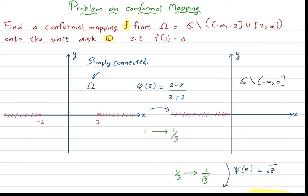By the Riemann mapping theorem, we know that a conformal map exists from this simply connected domain omega to the unit disk. This conformal map should satisfy the condition that one should be mapped to zero. Note that the point one is indeed in the domain omega.